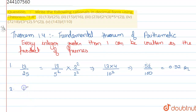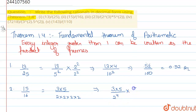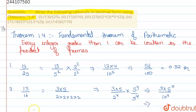The second rational is 15 by 16. So 15 can be written as 3 into 5, and 16 as 2 to the power 4. We convert to get 3 into 5 to the power 5 upon 10 to the power 4. We solve this to get 9375 divided by 10 to the power 4, which gives us 0.9375 — that's 4 digits before placing the decimal point.